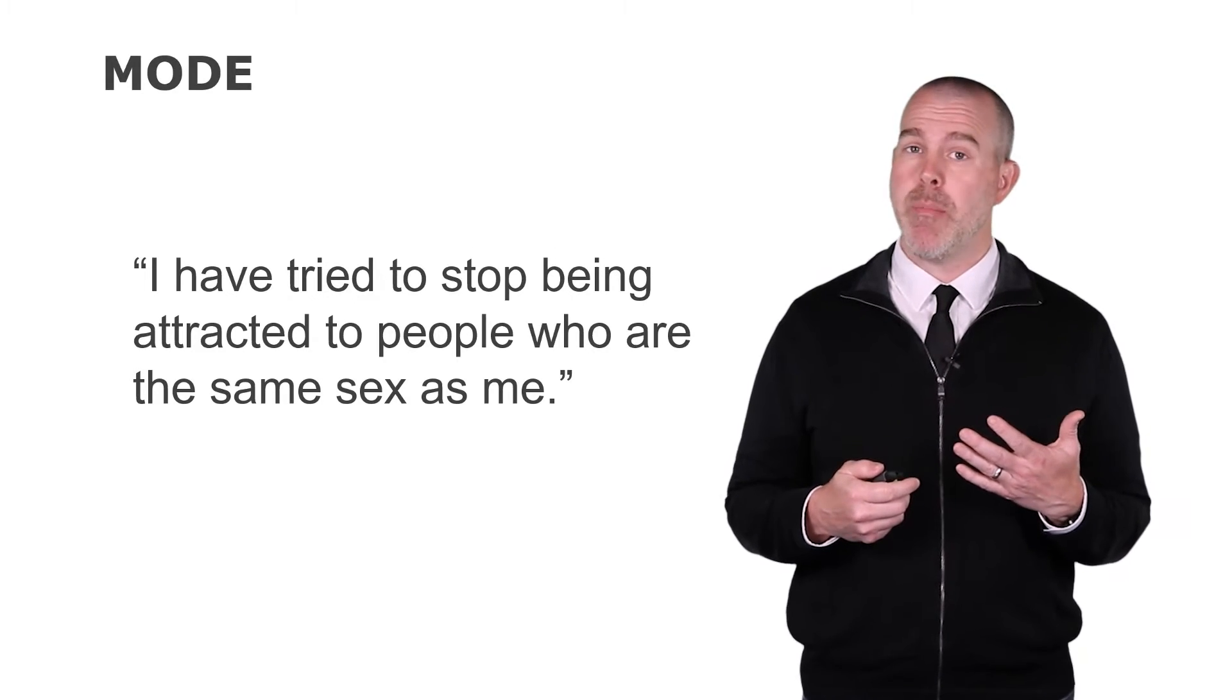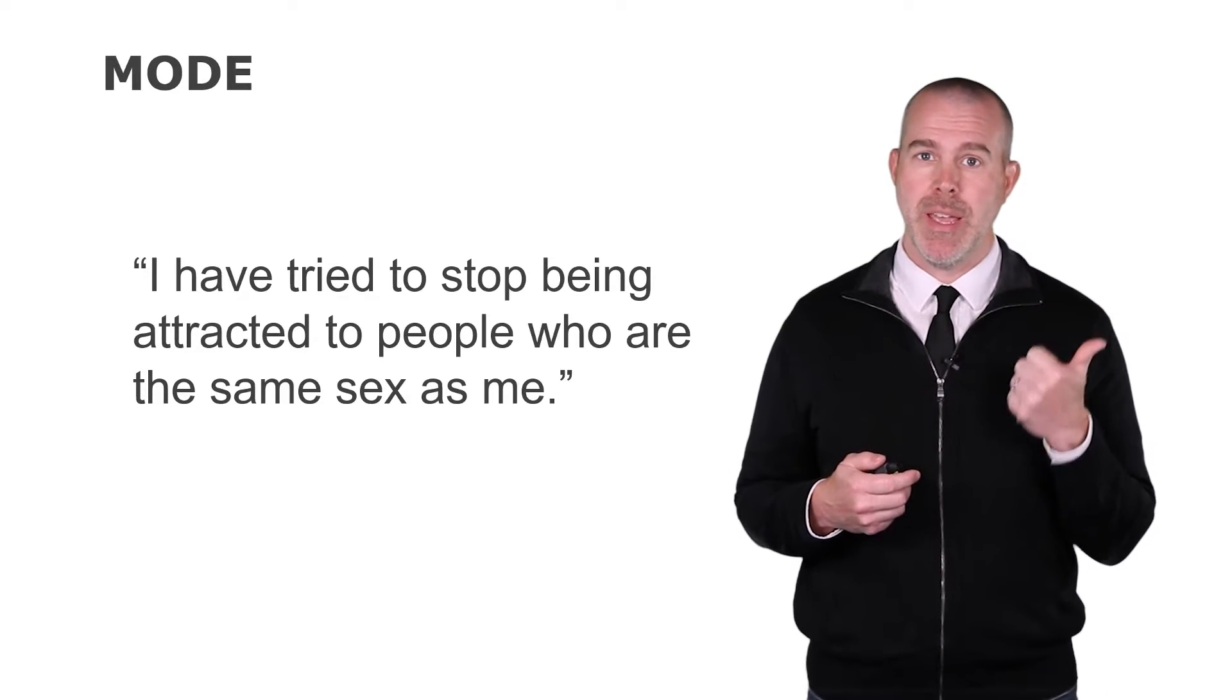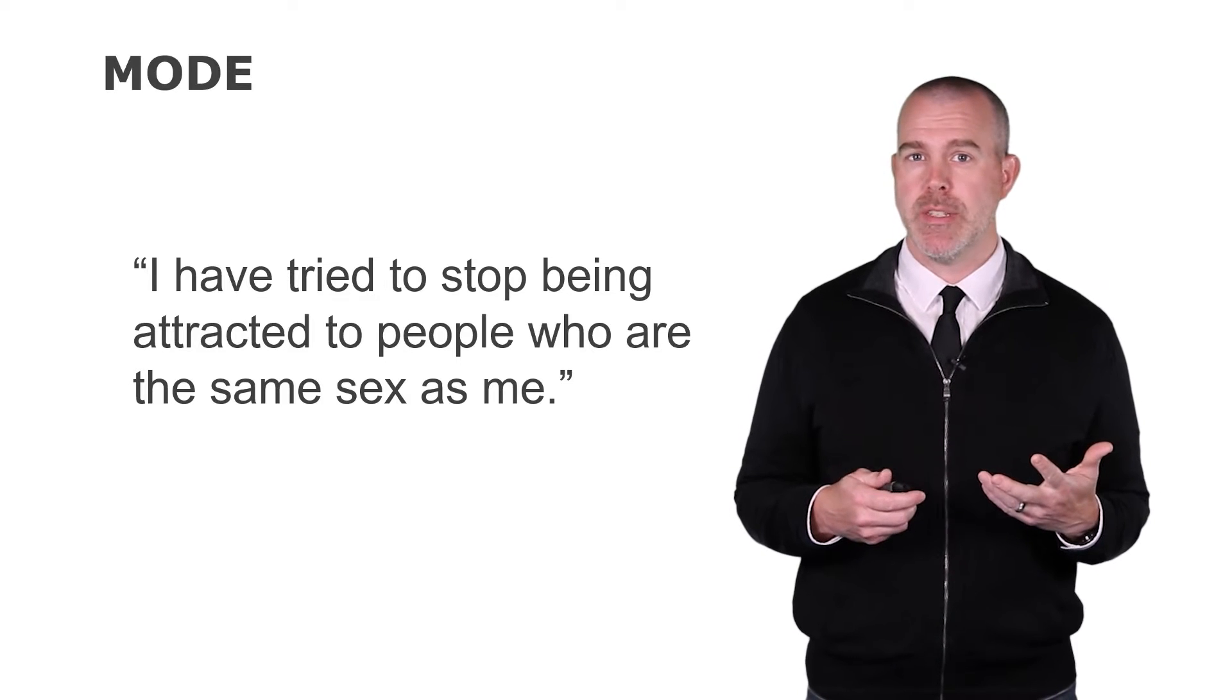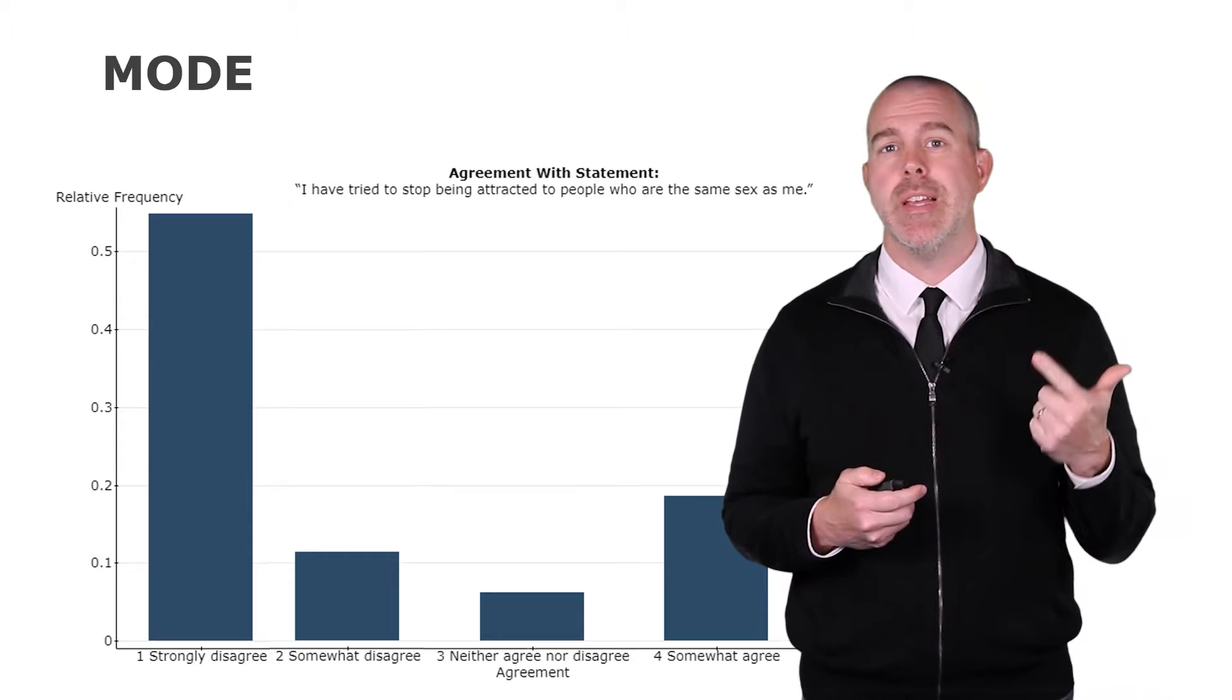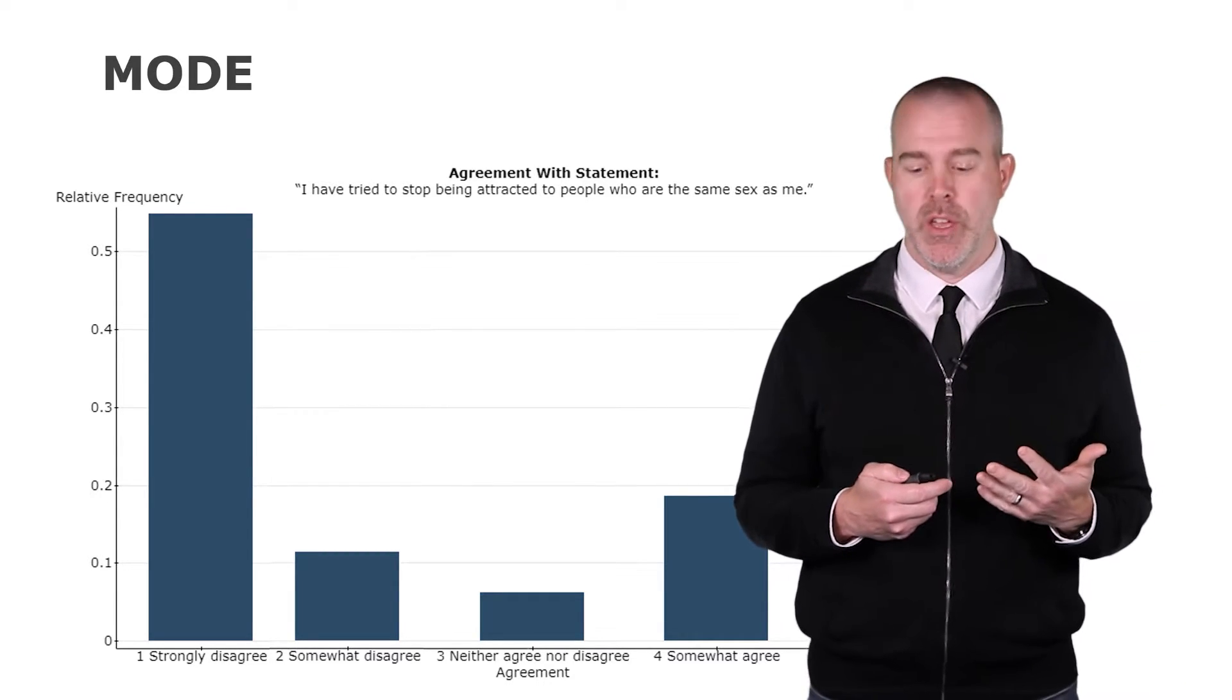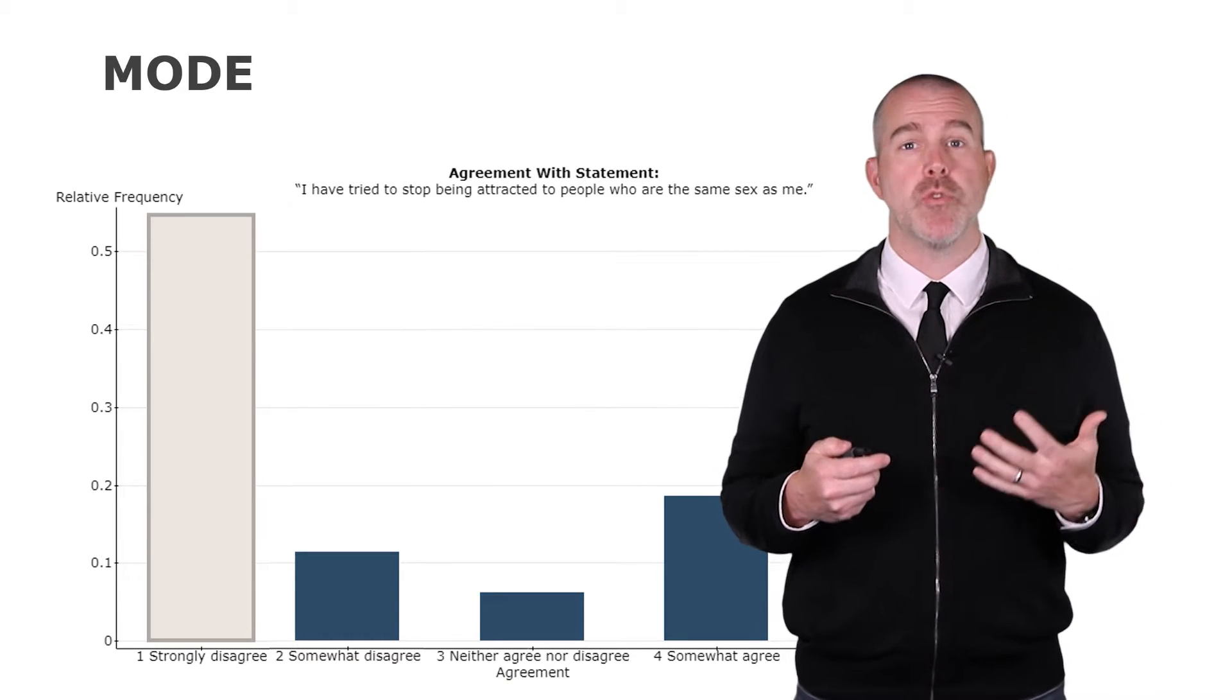One question in the survey was they've tried to stop being attracted to people who are the same sex. Again, this is a database made up exclusively of LGB, lesbian, gay, and bisexual. So all have some attraction to the opposite sex. Here's the survey responses on a five-scale: strongly disagree, disagree, agree, somewhat agree, and strongly agree. We can see here that the mode would be strongly disagree.